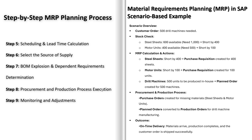Monitoring and adjustments: after procurement orders and production orders are created, the system continues to monitor the progress of procurement and production activities. When materials are received from suppliers, the goods receipt is registered in SAP. The production department begins manufacturing and production orders are tracked in SAP until completion. If there are any delays or discrepancies, SAP alerts the relevant teams, allowing them to take corrective actions.